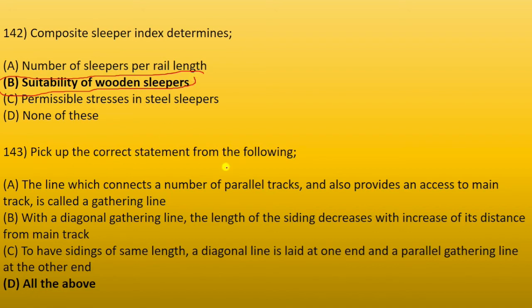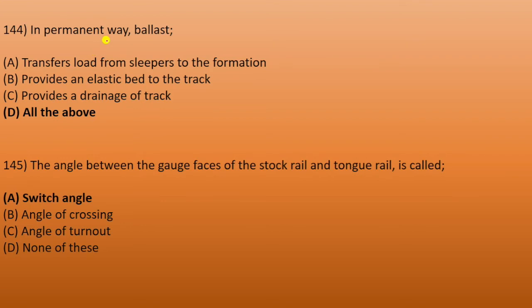Next: pick up the correct statement. The line connecting parallel tracks and providing access to the main track is called the gathering line. With a diagonal gathering line, the length of rail sidings decreases with increased distance from the main track. A parallel gathering line is at one end and a diagonal gathering line at the other — all of the above are correct. Next: in permanent way, ballast transfers load from sleepers to the formation, provides an elastic bed to the track, and provides drainage — all of the above.